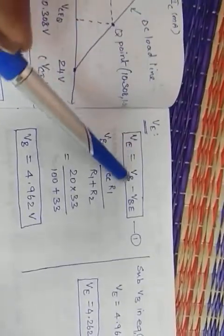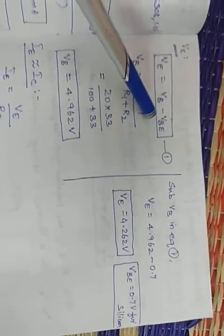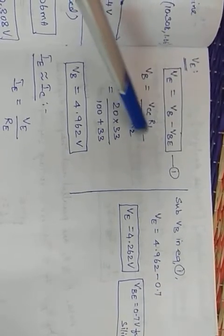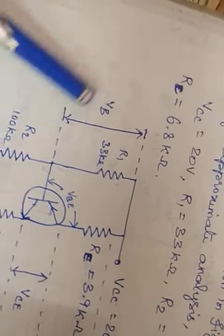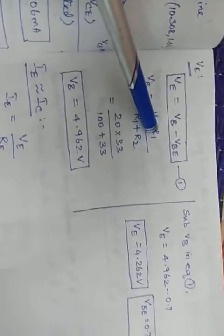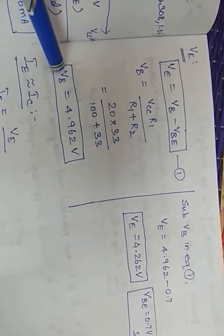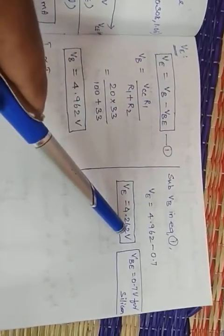We use the same equation: VE = VB − VBE. For VB: VB = VCC × R1 / (R1 + R2). Note we use R1 here instead of R2, because the figure shows VB is the voltage drop across R1. After simplifying, VB = 4.962V. Substituting into the equation, VE = 4.262V.